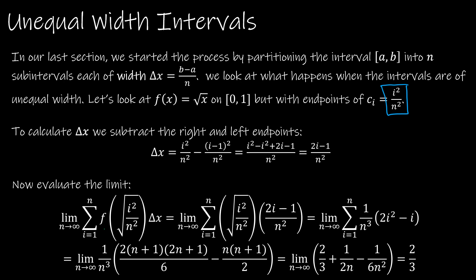Now, if we subtract the left and right endpoints, this is the same thing we did before. We said the two endpoints were a plus i minus 1 delta x and a plus i delta x. So if I'm subtracting those, where a is obviously 0, and this is i minus 1 delta x, we're basically using i squared over n squared, and we're getting delta x to be 2i minus 1 over n squared.